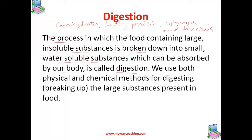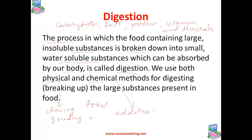We use both physical and chemical methods for digestion. The physical methods include chewing and grinding of the food, while the chemical methods include the addition of various digestive juices by the organism's digestive system.